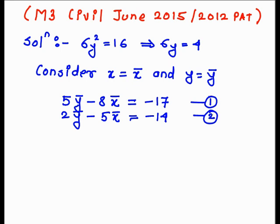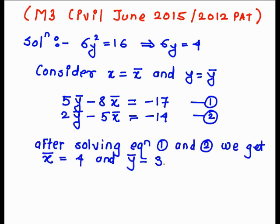By solving equations 1 and 2, we get the values of x bar and y bar. So x bar equals 4 and y bar equals 3, meaning the mean of x is 4 and the mean of y is 3.